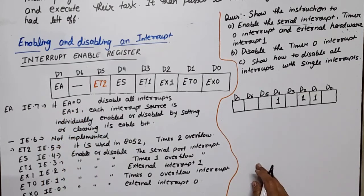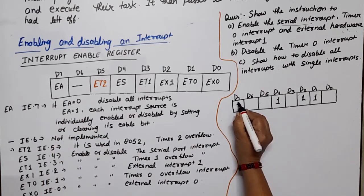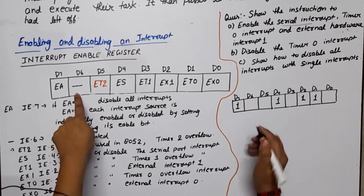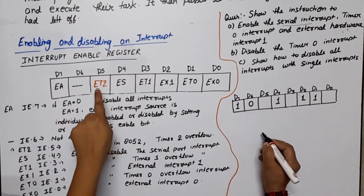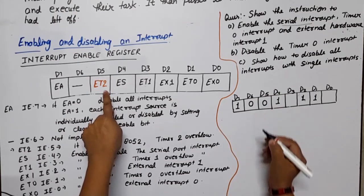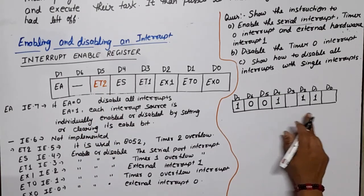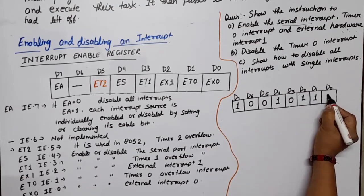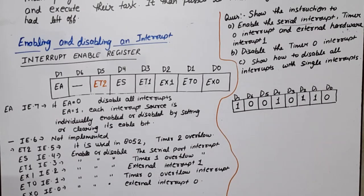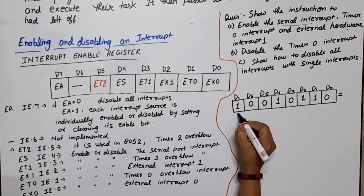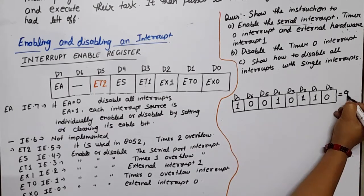If we set D7=1, the unused dash bit stays 0, ET2 (for 8052) stays 0. The bits we needed to enable are set to 1, and remaining bits are 0. So the binary value of the IE register becomes 10010110B. Converting to hex: 1001 is 9, and 0110 is 6, giving the hex value 96H.